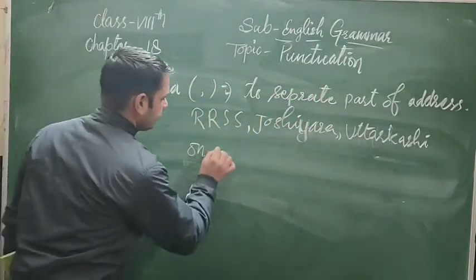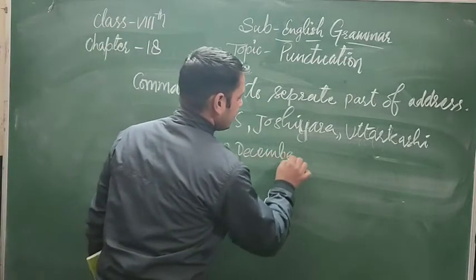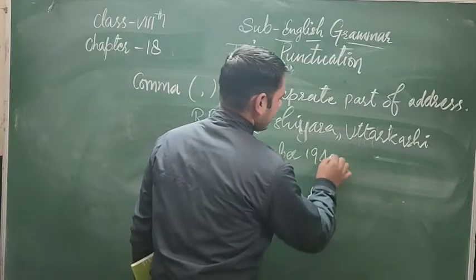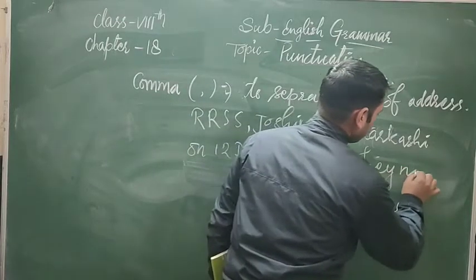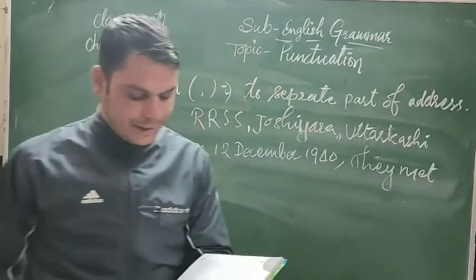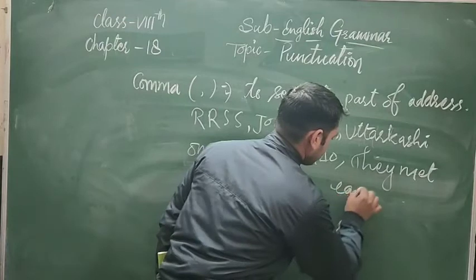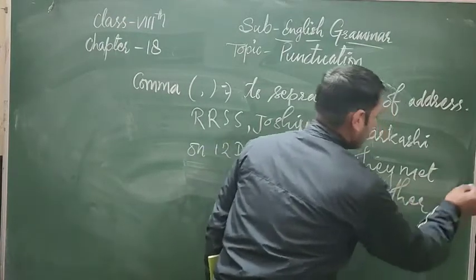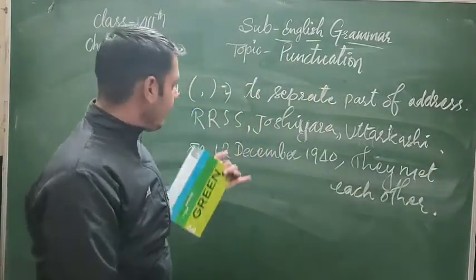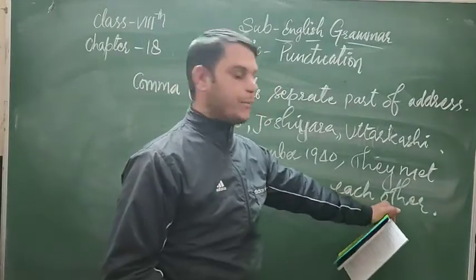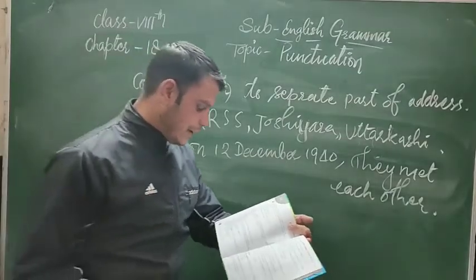Similarly, to separate parts of a date from other words following the date. For example: 'On 12 December, 1940, they met.' — मतलब किसी particular date पर जो action हुआ, उसको date से separate करने के लिए comma का use करेंगे।